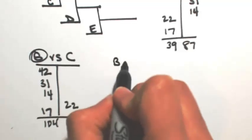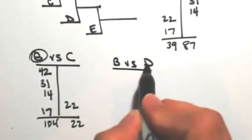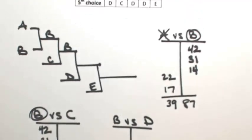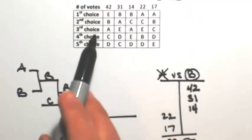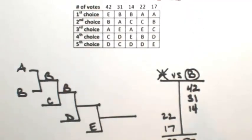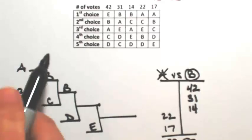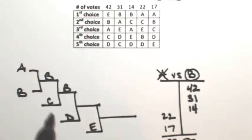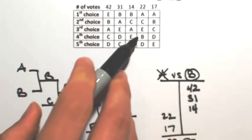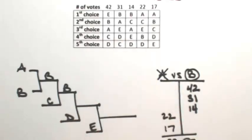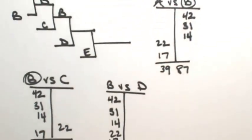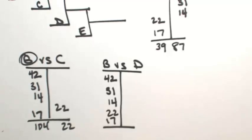So now we're going to do B versus D. In the first column, B is preferred over D, so B gets 42. B over D, 31. B over D, 14. B over D, 22. And B over D, 17. So B gets all of those votes, so clearly B is the winner. 42 and 31 and 14, 22, and 17 is everybody. 126 to 0.